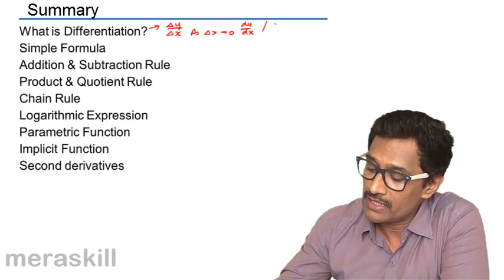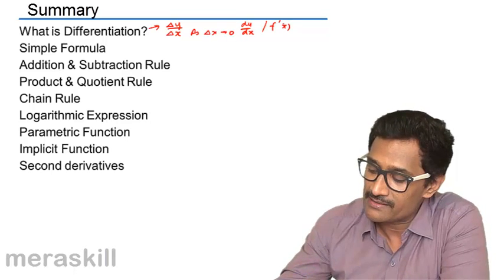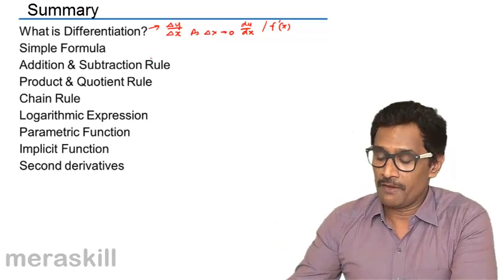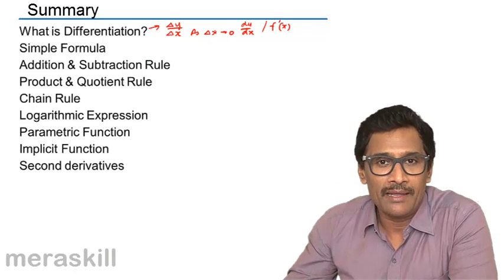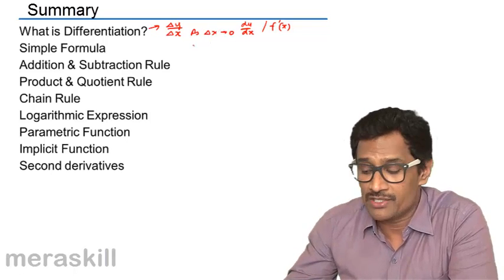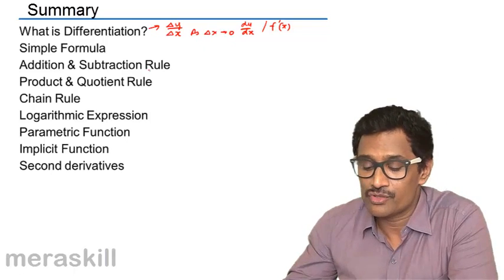We could even call it as f dash x. That is, we took the function. We did how we did. We found a change in y upon change in x, we find it. And that gives you the derivation.